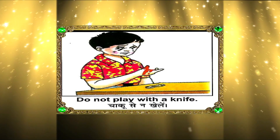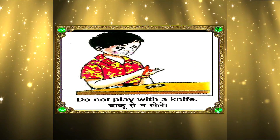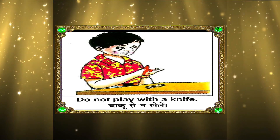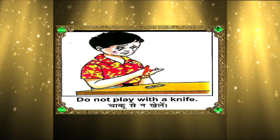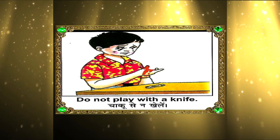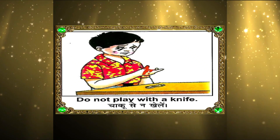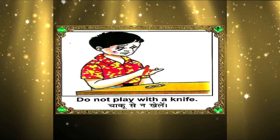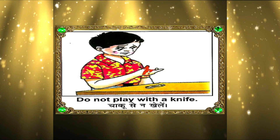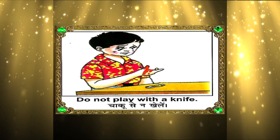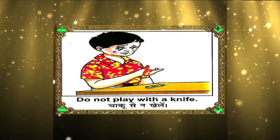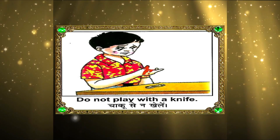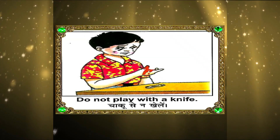Number 7: Do not play with a knife. Chaku se na khele. A knife is a very vital thing and it has sharp edges. If we play with knives it can cut our fingers or any part that comes in contact with the edges of the knife.